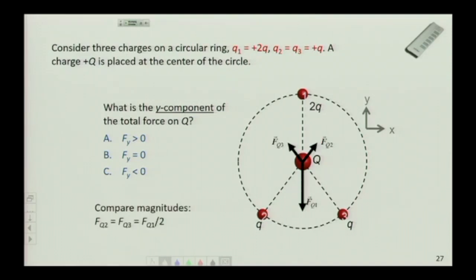And why is that? If you compare the magnitudes, because these are all equidistant from the center. So if I were to compare the magnitudes, you would have F1 is K times capital Q times 2Q over the radius squared. F2 would be K times capital Q times 1Q over the same radius squared and that's equal to F3. So if I compare these magnitudes, F1 is 2 times F2 and F3.